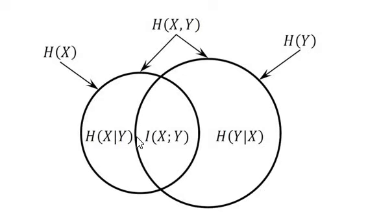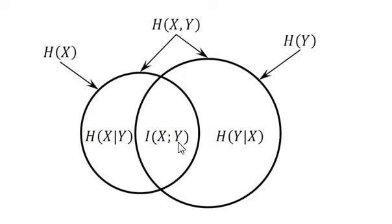What you can see is: this entire circle is h(x), and this entire circle is h(y). The intersection region — the common region — is what we call i(x, y), which is the mutual information. The full region covering both circles is h(x, y), which is called the joint entropy.